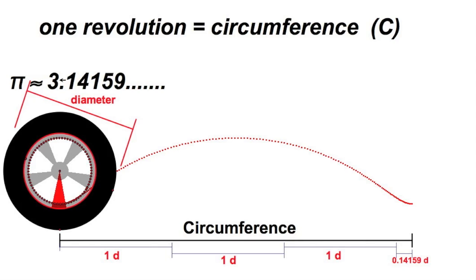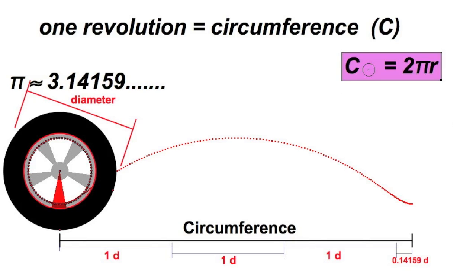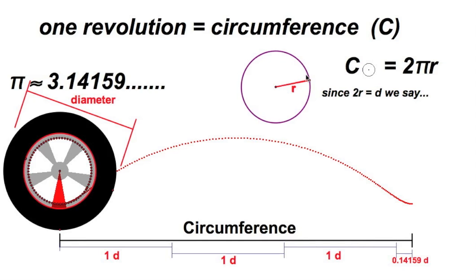Those of you in high school know this, and you have at least the first six digits memorized because you know that on March 14th you will be dismissed at 1:59 — that's pi day. Now let's look at this formula. The circumference of a circle is 2πr. But this is a radius, and this is also a radius. If two radii make a diameter, let's simplify this formula: the circumference of any circle is πd. Now we've got something to work with.